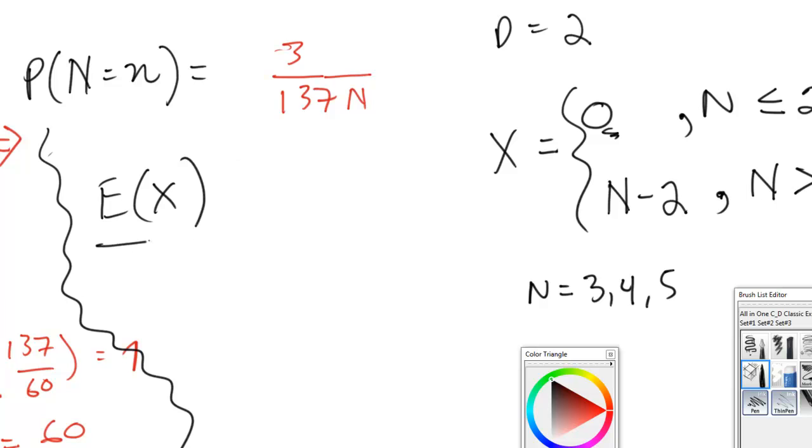So we know that our expected value is the sum from n equals 3 all the way to 5 of n minus 2, times the probability of n equals n. So times 3 over 137n. Sorry for being kind of messy. Alrighty.